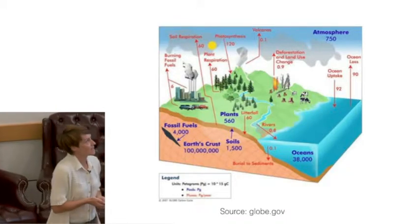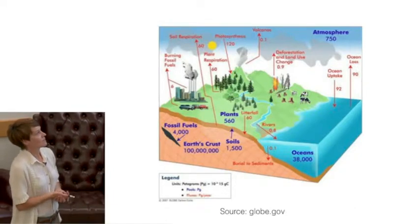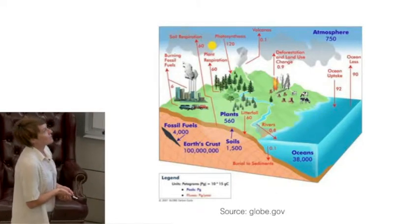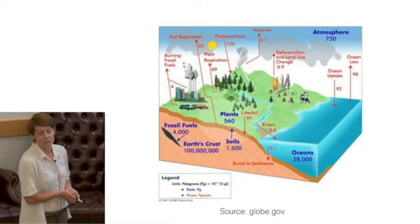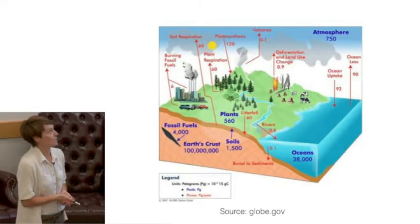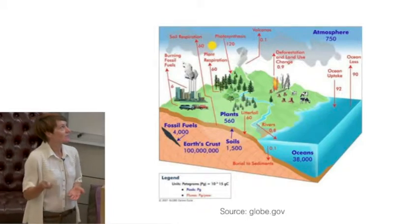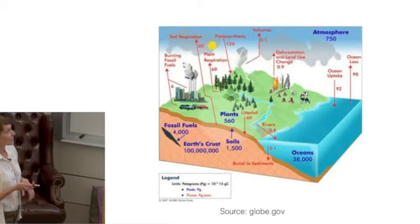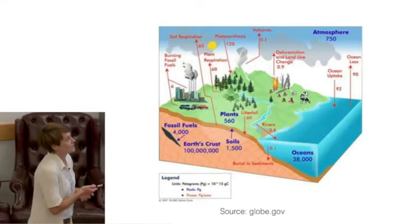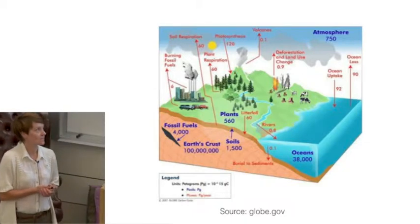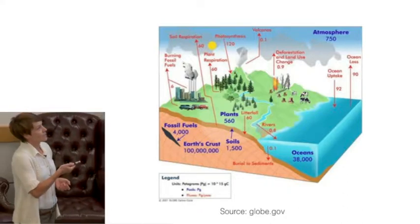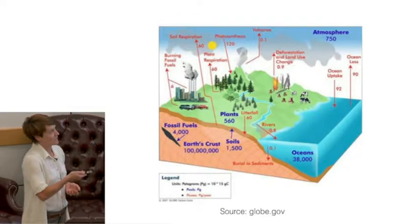The key question is not so much the size of the reservoirs, but the size of the fluxes. Starting with the biosphere: we have photosynthesis taking up 120 petagrams of carbon per year, and most of that carbon is returned through soil and plant respiration. So the net contribution to the atmosphere from the biosphere is effectively zero. Looking at the ocean: currently, we have a net flux of two petagrams per year of CO2 into the ocean, driven primarily by the increase in CO2 over the last several decades. Over geologic time, these two fluxes have also balanced out to a net of zero.